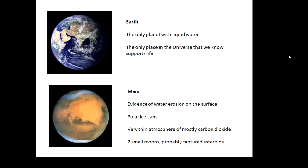Mars is further away. There is evidence that there was water on Mars in the past, millions of years ago, because there's evidence of erosion on the surface. There are polar ice caps, so there is ice on Mars. It has a very thin atmosphere, mostly carbon dioxide, and it has two small moons, Phobos and Deimos, which are probably captured asteroids—asteroids that got a bit too close and ended up in orbit around Mars.